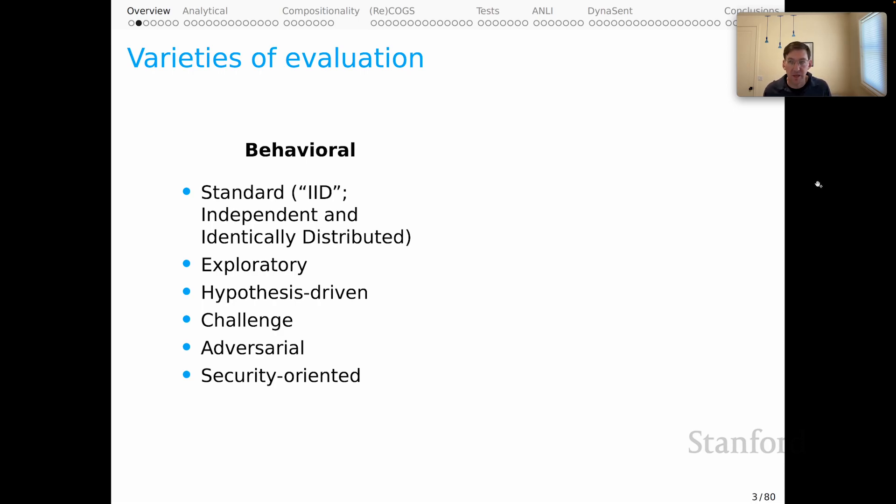Those are all behavioral evaluations. We could contrast those with what I've called structural evaluations: probing, feature attribution, and interventions. These are the topic of the next unit. And with structural evaluations, what we try to do is go beyond input-output mappings and really understand the mechanisms at work behind those behaviors. And I think the ideal for that would be that we uncover the causal mechanisms behind model behaviors. Those go beyond behavioral testing and I think complement behavioral testing really powerfully.